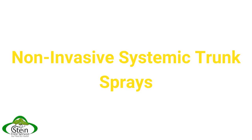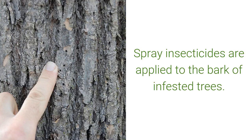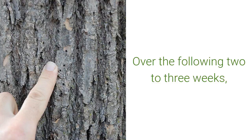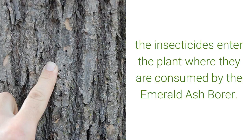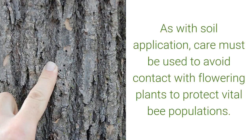Non-invasive systemic trunk sprays involve spray insecticides applied to the bark of infested trees. Over the following two to three weeks, the insecticides enter the plant where they are consumed by the emerald ash borer. As with soil application, care must be used to avoid contact with flowering plants to protect vital bee populations.